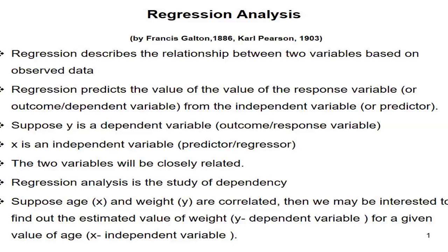Let us look at an example. Suppose x and y are correlated. We may be interested in finding the estimated value of y from x — this is one example of regression analysis. So y is the dependent variable and x is the independent variable, and from known values of x we can determine the unknown value of y.